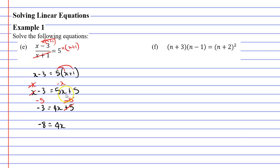Next, I'm going to divide both terms by 4 to get X on its own. Negative 8 divided by 4 is negative 2, which must equal X. Switching the sides, X equals negative 2.